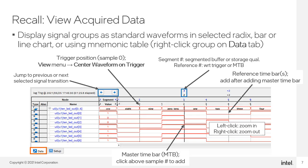When the trigger occurs, the capture data is stored in the memory buffer, transferred to the SignalTap file, and displayed in the Data tab. The Data tab is the main interface for immediately viewing captured data. The Logic Analyzer will automatically switch to the Data tab when data is transferred from the buffer, so even if the trigger did not occur, you can still view what was in the buffer when the Logic Analyzer was stopped.